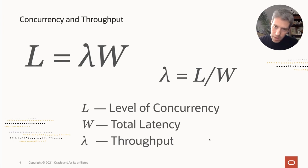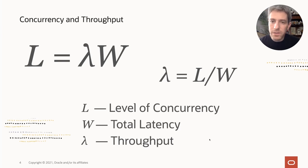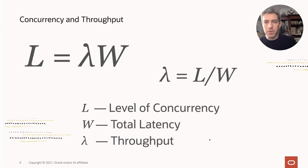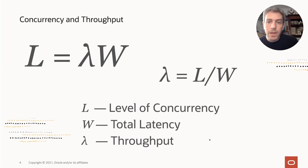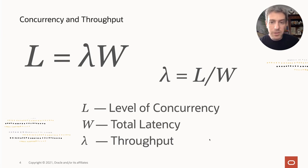Lambda is a requirement of the system. To meet the requirements, we can either reduce W or increase L. W, the total latency, is usually a constant for any given system, as it depends on how much work we need to do, the speed of our database, etc. So we don't have that much control over it. The variable we can more easily control is L, our level of concurrency, or the number of transactions the system can process at any given time. We can increase it by buying more machines, but that costs money, so we'd like the level of concurrency for any single server to be high.